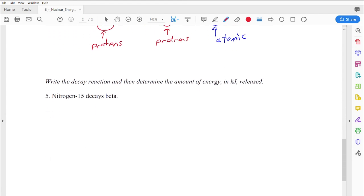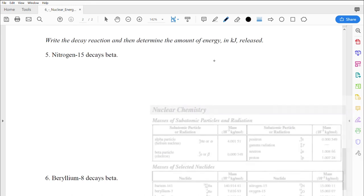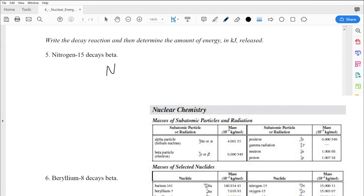The last one we're going to tackle here is nitrogen-15 beta decay. We're going to figure out how much energy is released, so we're going to put both of those ideas together. First, let's write out what nitrogen-15 looks like as a beta decay. I'm going to find nitrogen-15 on my data sheet. It looks like this: N with a 15 as the mass number and a 7 as the atomic number. I'm going to write down the mass as I go: 15.00011 times 10 to the negative 3 kilojoules per mole.